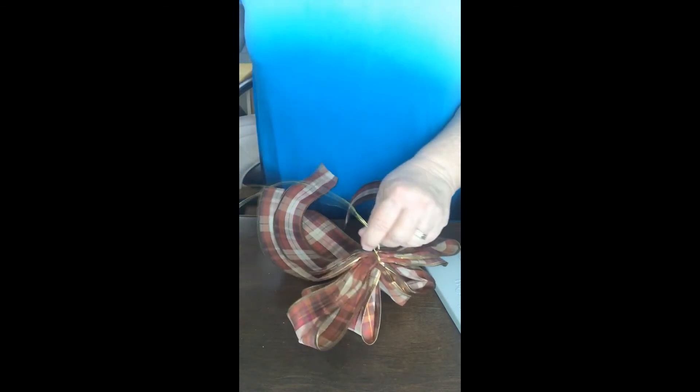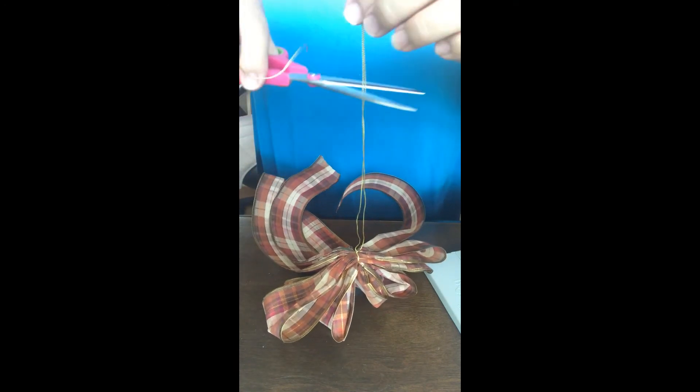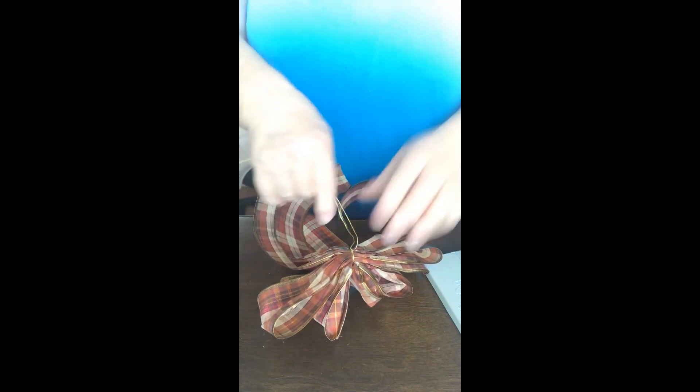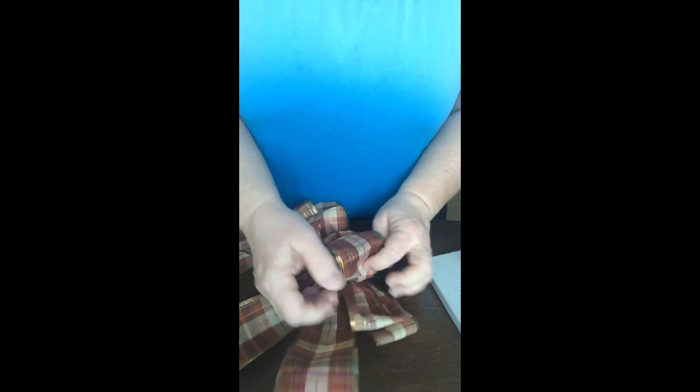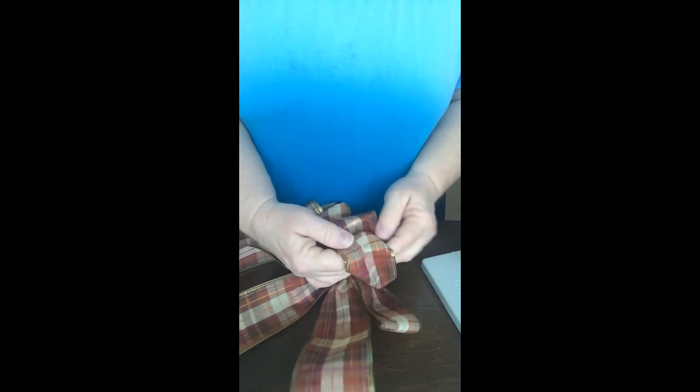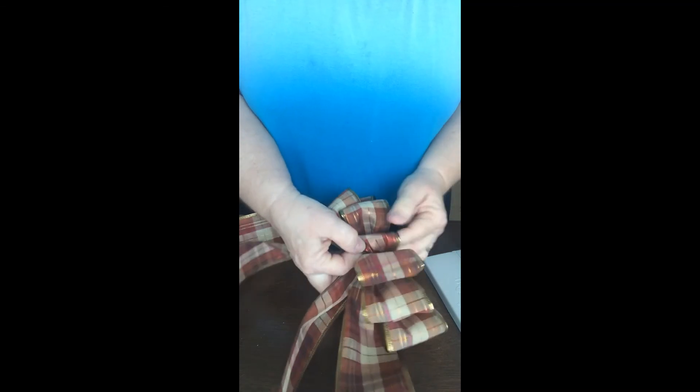Now, depending on what you're going to do with your bow, that determines how much you want to cut off of here. I might tie this to a wreath, so I'm going to leave a nice bit. The only thing you have left to do is shape your bow, and this is a small one. So we're just going to pull our loops and fluff them a little bit so they're nice and fluffy. This is a really pretty fall plaid color ribbon. I like it a lot, don't you? So we're just going to fluff it out.